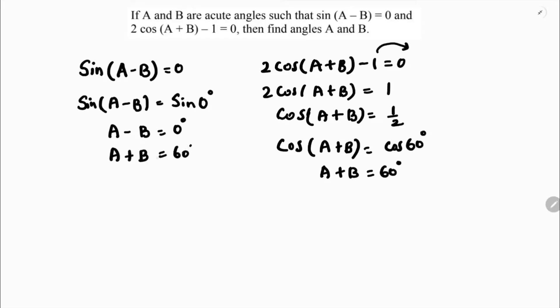If I add both equations, minus B plus B cancel, 2 times A is 60 degrees. A is 60 upon 2, so A value is 30 degrees. If I substitute here, 30 degrees plus B is 60, so B is 60 degrees minus 30 degrees. B equals 30 degrees. So here A and B values are same. A is 30 and B is also 30.